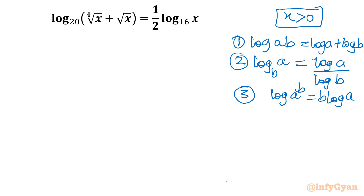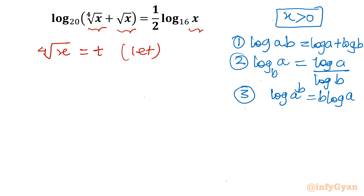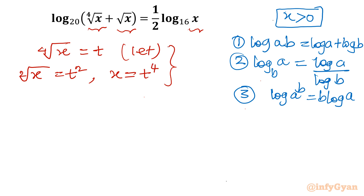Now let's begin with substitution. Fourth root x, square root x, and x are all involved. So let us consider ⁴√x = t. From this it follows that √x = t² (by squaring), and x = t⁴ (by squaring again). We will put all three values into the original equation.